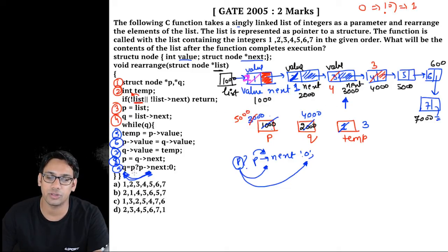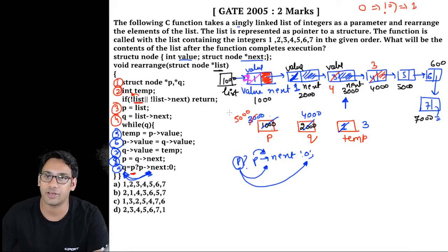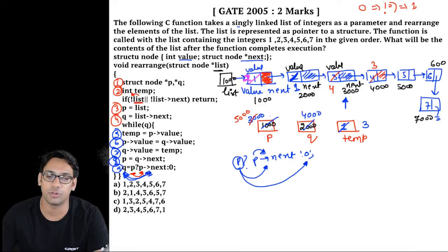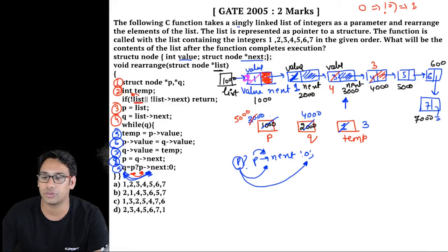Line 9 again: q = p ? p->next : 0. p is storing 5000, which is not null, so q gets p->next. The next part of the node at 5000 is 6000, therefore q now stores 6000.